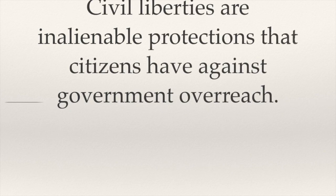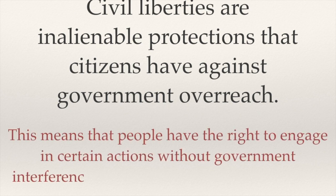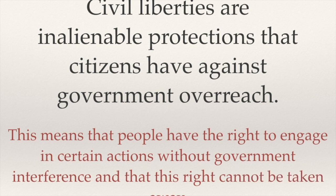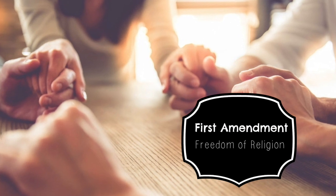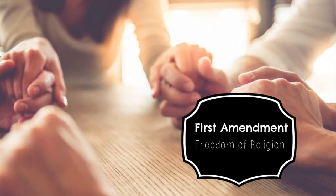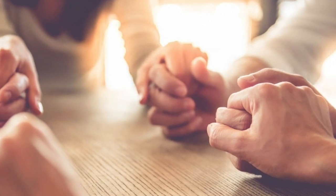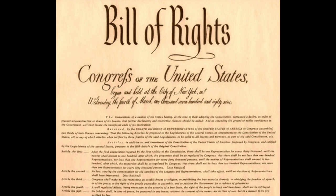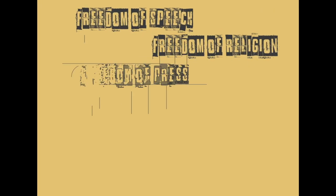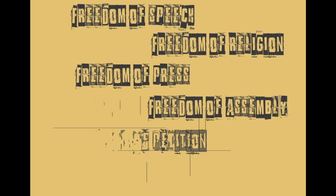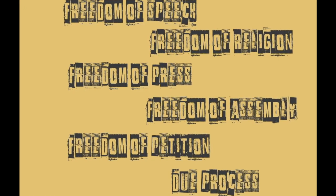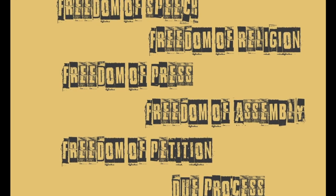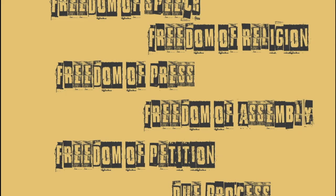In the United States, civil liberties are inalienable protections that citizens have against government overreach. This means that people have the right to engage in certain actions without government interference, and that this right cannot be taken away. For example, individuals have the right to practice their religion without government intrusion. Constitutionally guaranteed civil liberties are found in the Bill of Rights — the first ten amendments to the Constitution — and include freedom of speech, religion, press, assembly, and petition, as well as the due process of the law. However, civil liberties can come into conflict with government or societal objectives, such as national security.